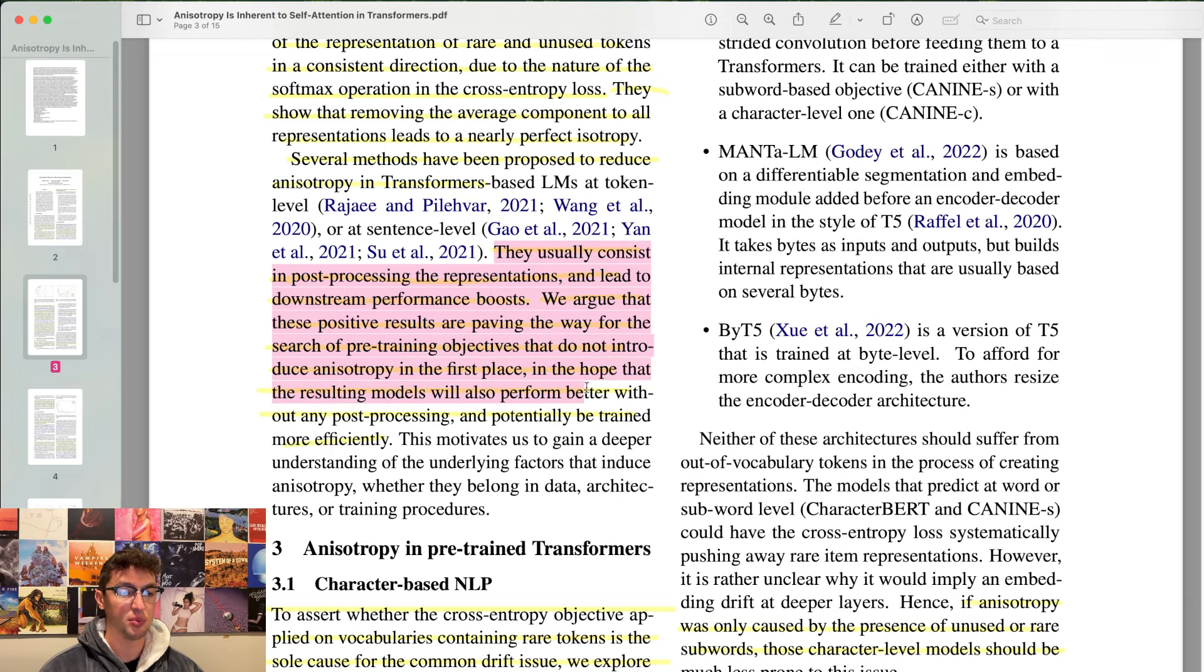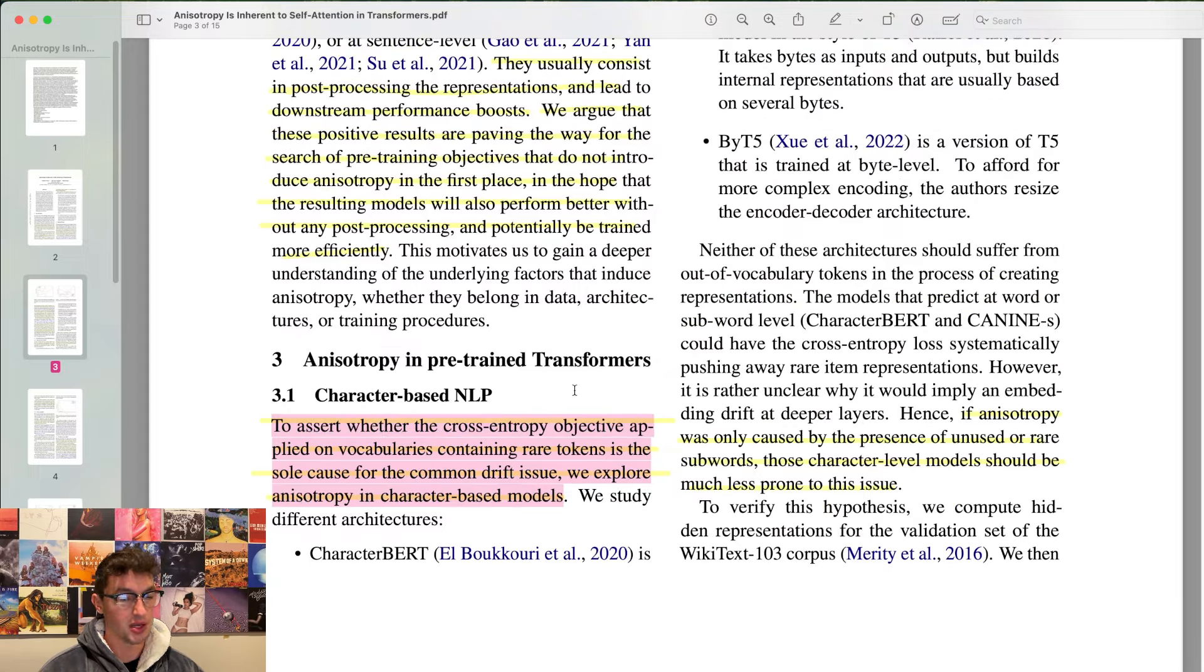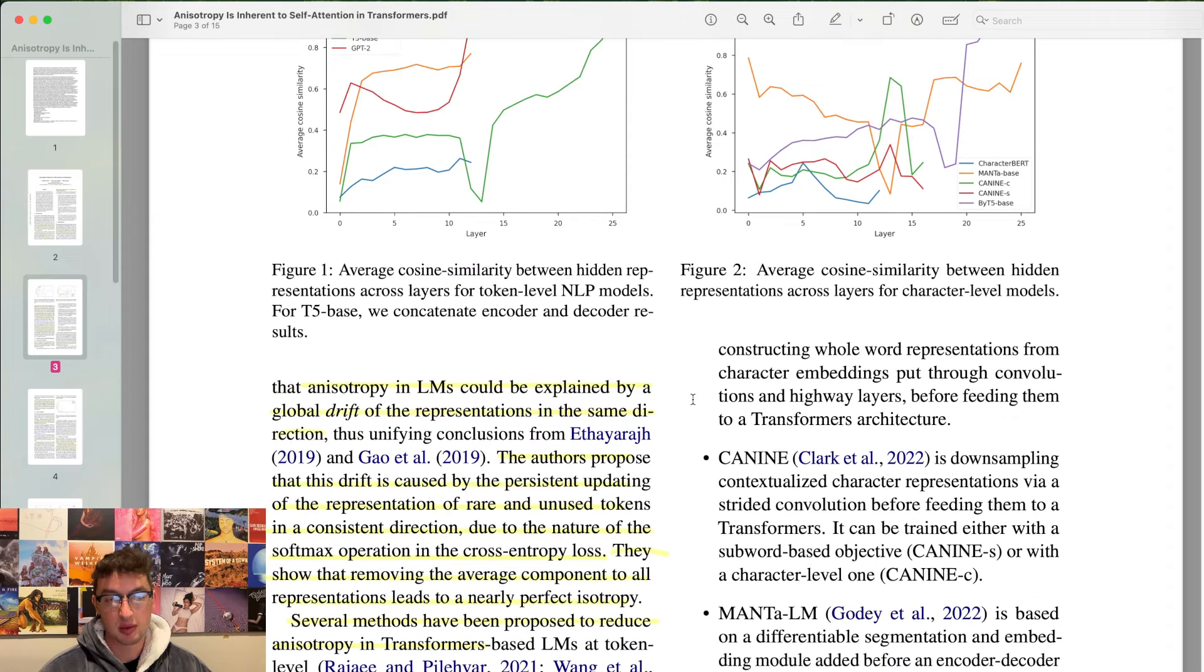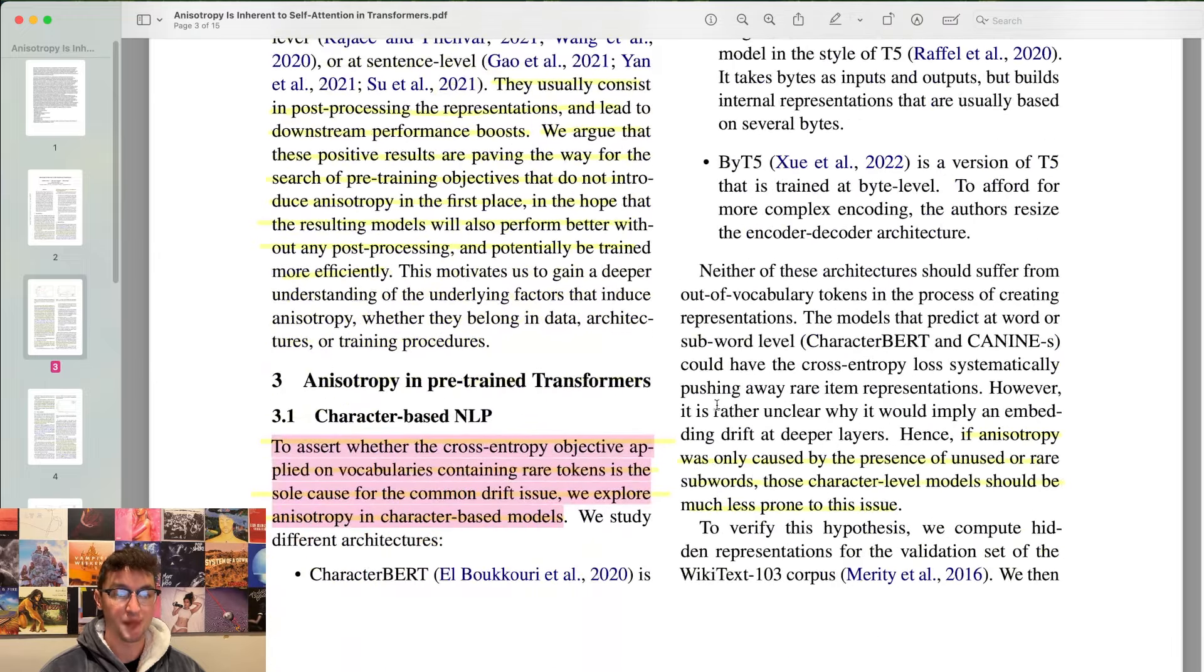We argue that these positive results are paving the way for the search of pre-training objectives that do not introduce anisotropy in the first place in the hope that the resulting models will also perform better without any post-processing. To assert whether the cross-entropy objective applied on vocabularies containing rare tokens is the sole cause, we explore anisotropy in character-based models. By definition, there is no rare token, no rare character. Relatively, I'm sure like X and Y and Q are more rare than S and E kind of thing, but overall they mean seriously rare.